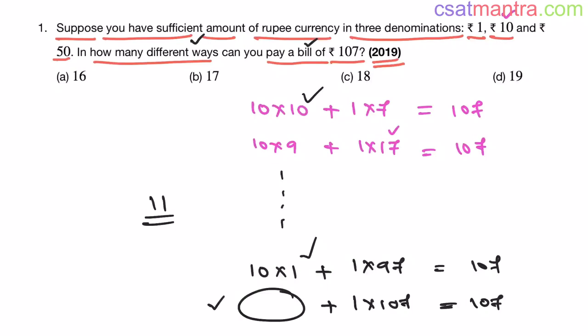So what is our answer? When we have 2 fifty-rupee notes, we can pay the bill in 1 way. When we have 1 fifty-rupee note, we can pay in 6 ways. When we have no 50-rupee notes, we can pay in 11 ways. Total: 1 + 6 + 11 = 18. Our answer is C. The approach: fix one denomination — here we fix the 50-rupee notes — and count the ways to pay the remaining amount. Solve step by step.